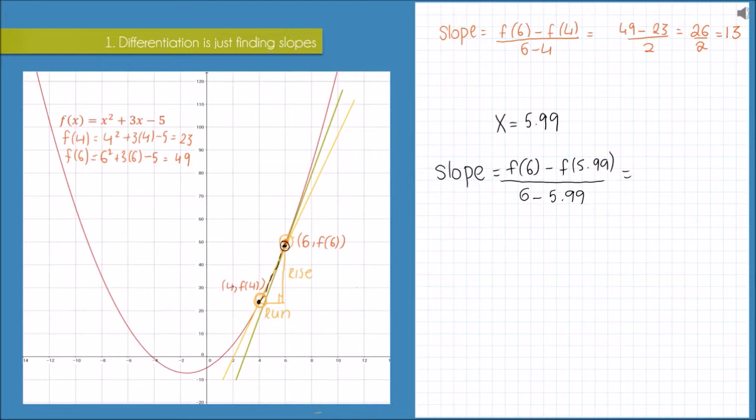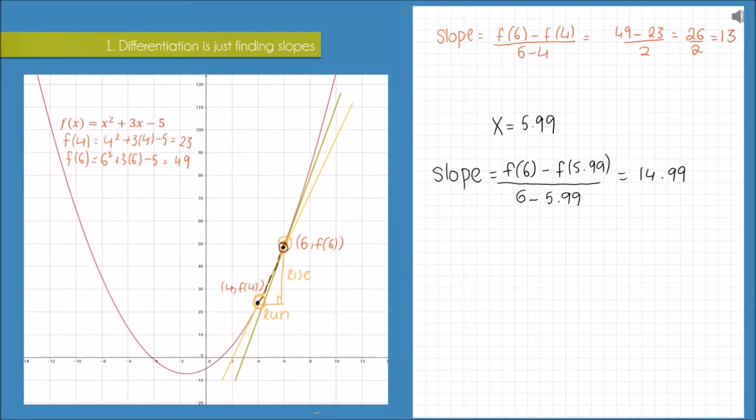And if I was to put that into my calculator, I would get a value of 14.99, and as you can see that is a lot better approximation of the real slope of the tangent line, which is 15. Of course, I could take values of x even closer to 6 again.